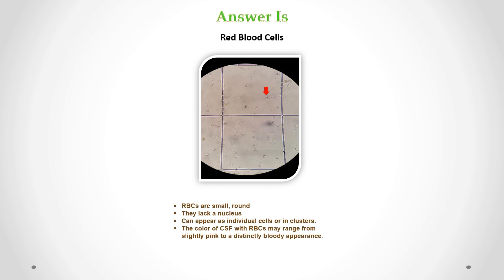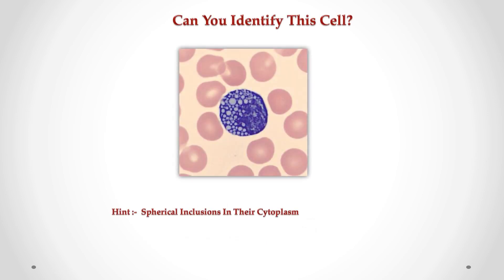Correct answer is red blood cells. We can see small and round cells — they lack a nucleus. They can appear as individual cells or in clusters, and the color may range from slightly pink to a distinctly bloody appearance. Can you identify this cell in CSF?